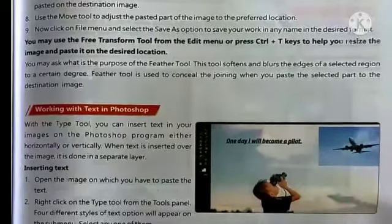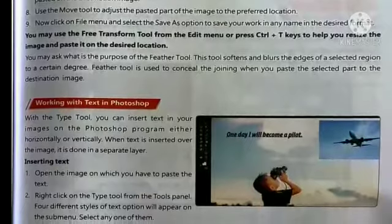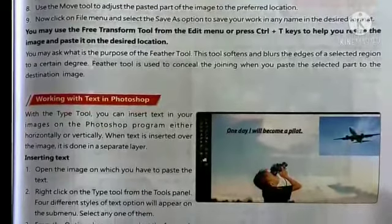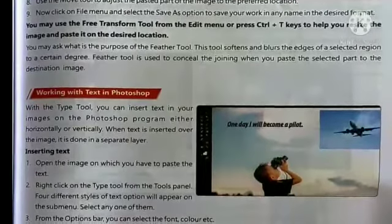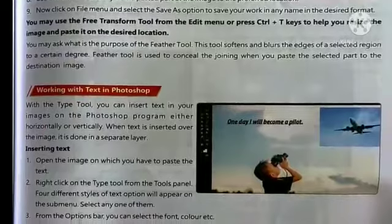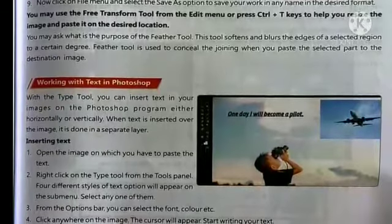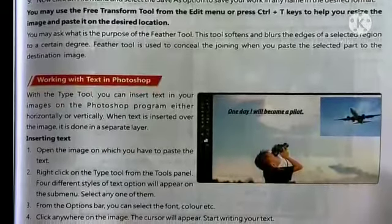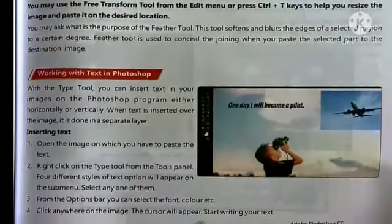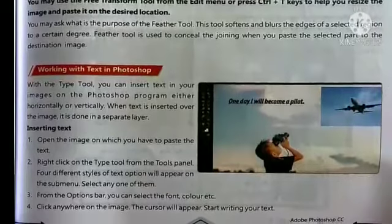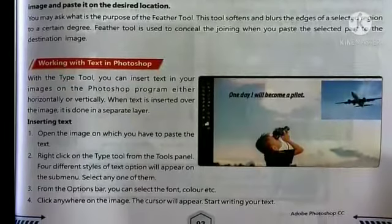Working with text in Photoshop: now that you have merged two images together, if you want to display any text, with the help of the Type tool you can insert text. Open the image, right-click on the Type tool from the Tools panel — four different text style options will appear. Select one, choose font color from the options bar, click anywhere on the image, and start writing your text.